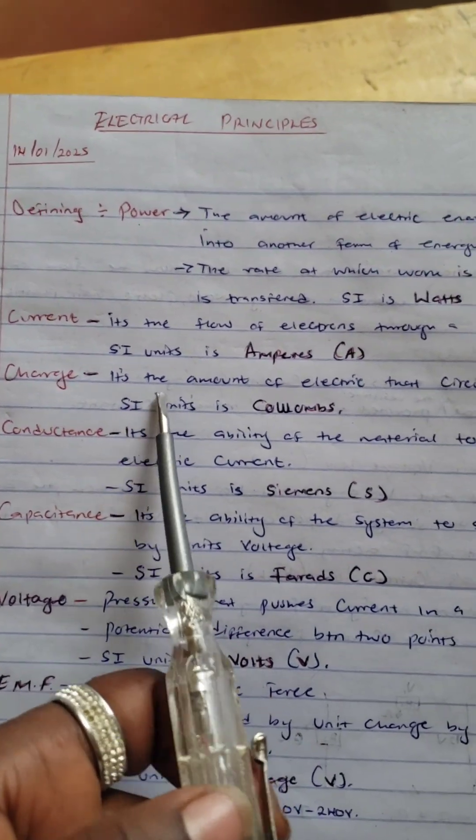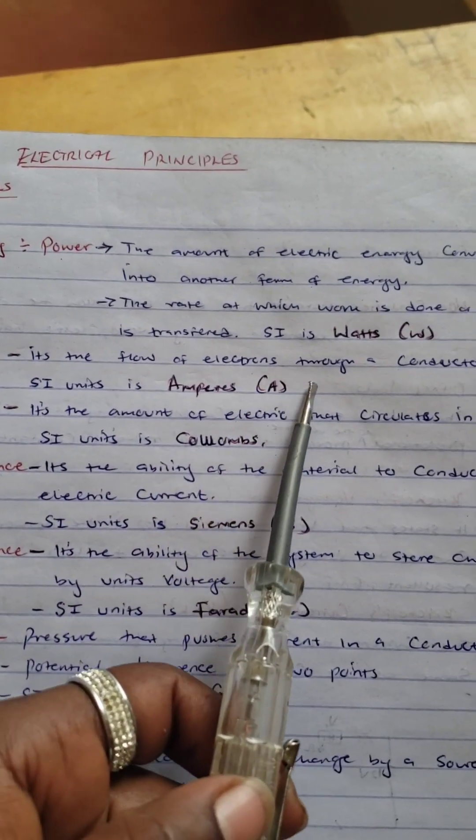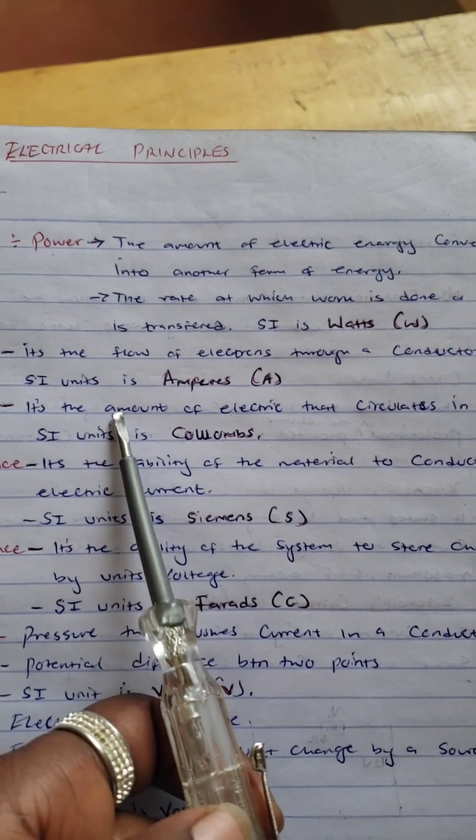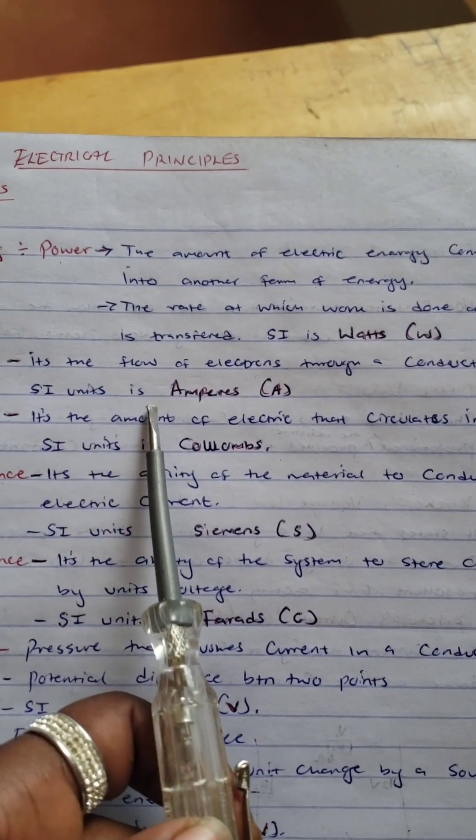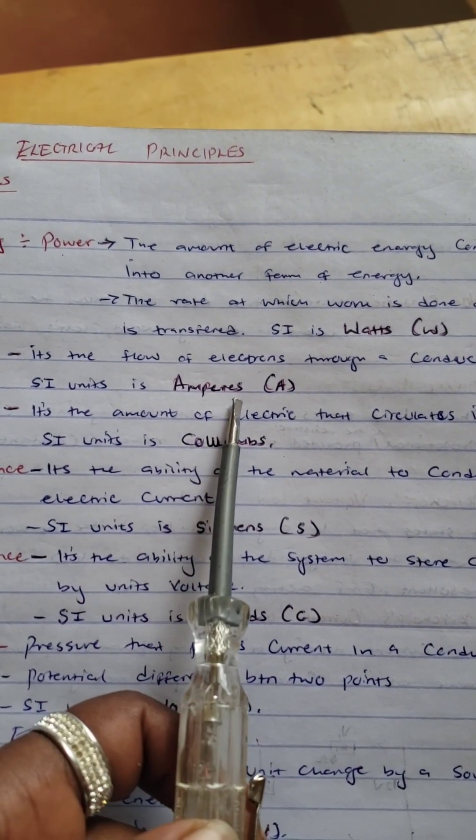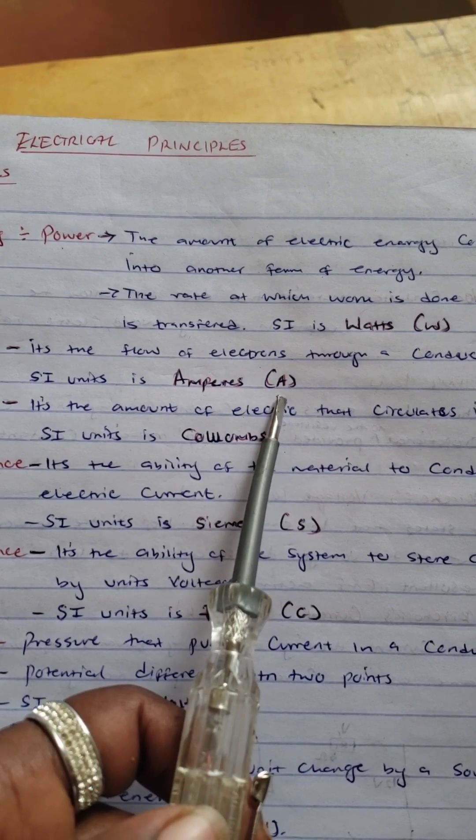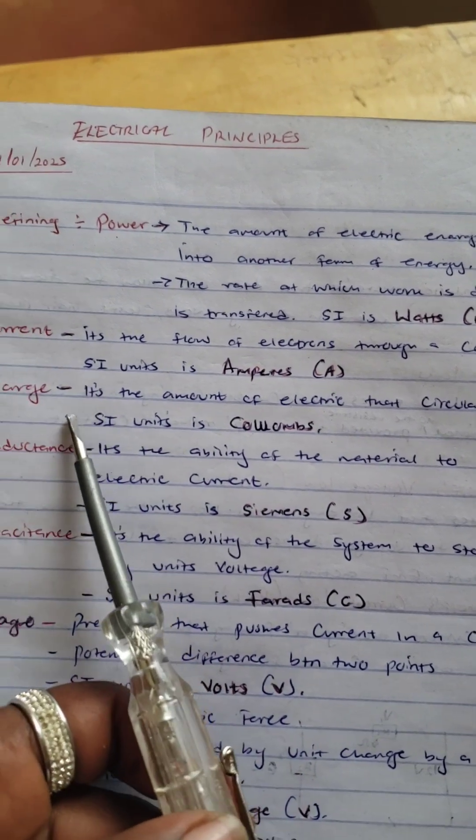Let's define current. Current is the flow of electrons through a conductor. The SI unit of current is amperes, letter A.